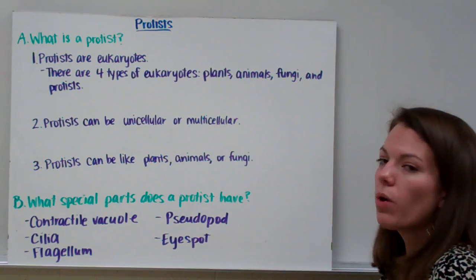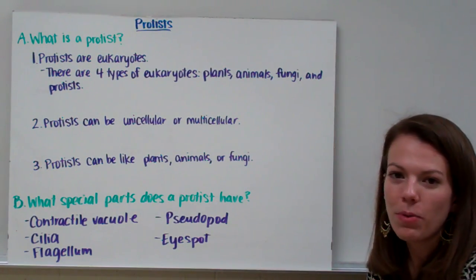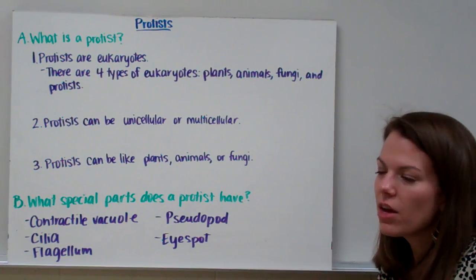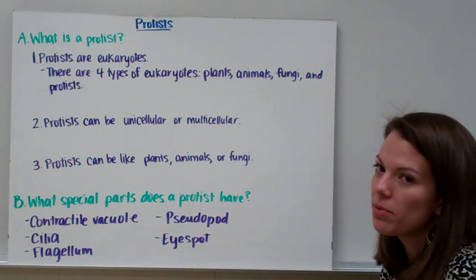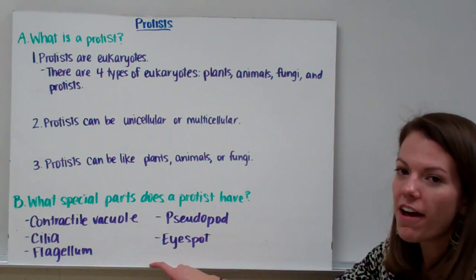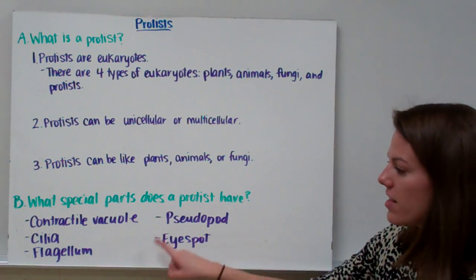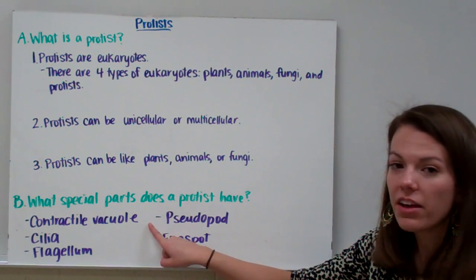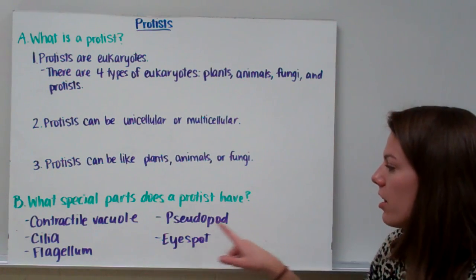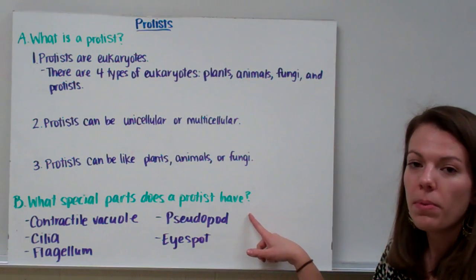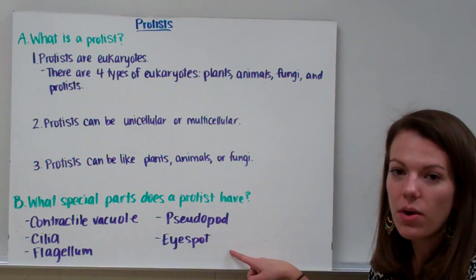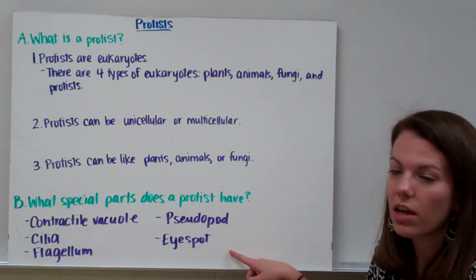You might be wondering what kind of special parts a protist has. It doesn't have hands or feet like a human does, but it does have five special parts that you'll need to know about in class: the contractile vacuole, cilia, flagellum, a pseudopod, and an eye spot. So let's go ahead and take a closer look at those.